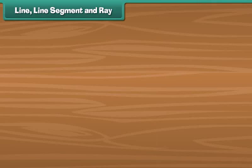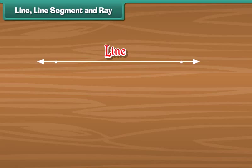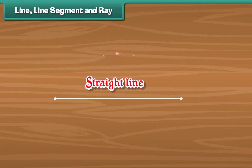A line is a group of points on a straight path. Plot two points and join them — the result is a straight line. A line has no end points; it can be extended infinitely from both sides.